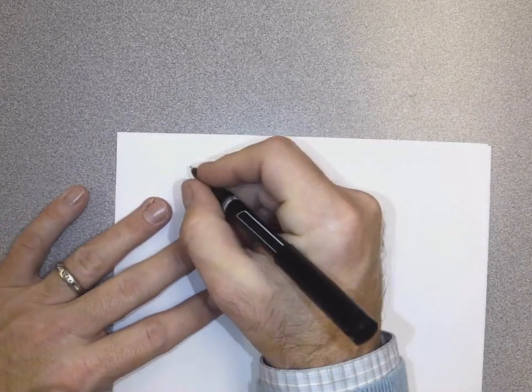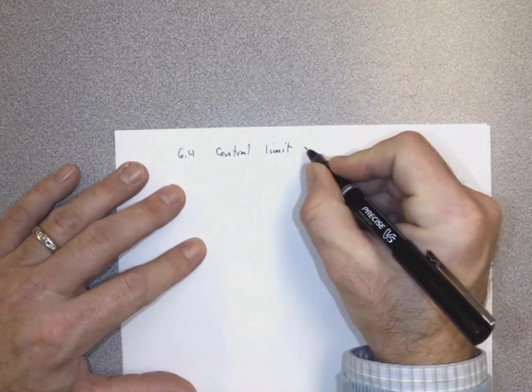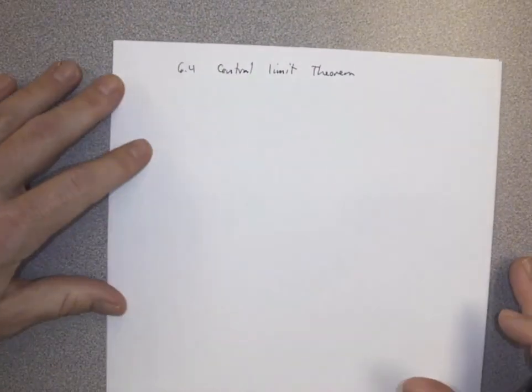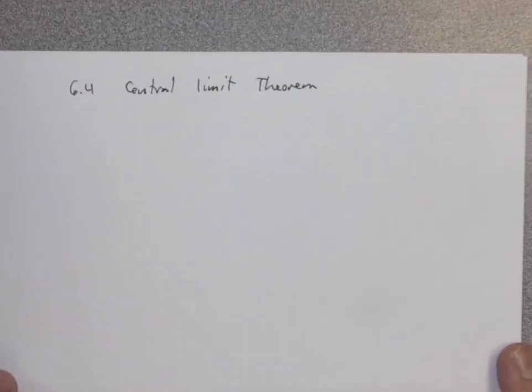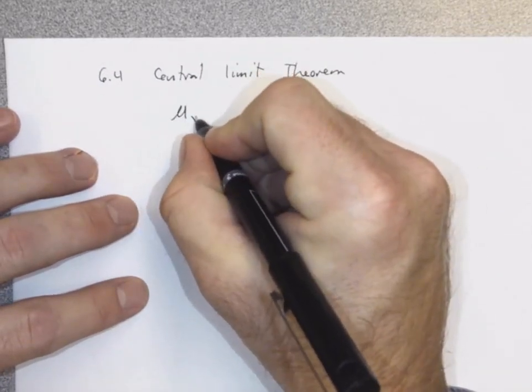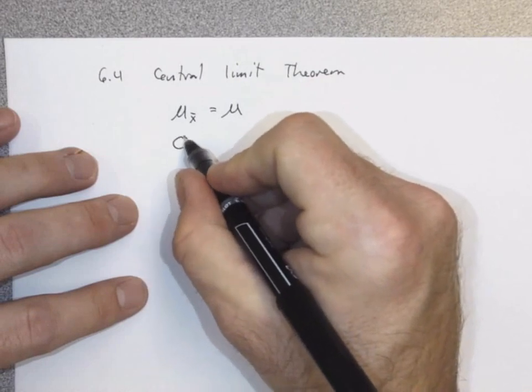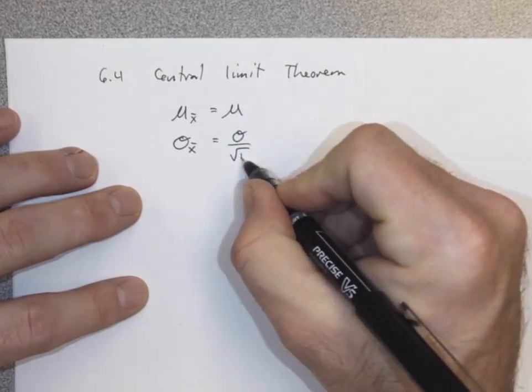Section 6.4 is the central limit theorem, which allows us to find probabilities of means. The mean of the sample means is equal to the population mean. The standard deviation of all the sample means is equal to the standard deviation of the population divided by the square root of the sample size.